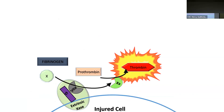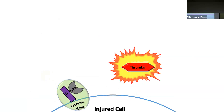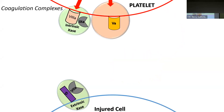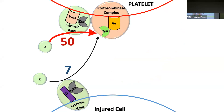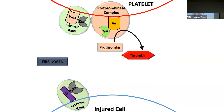Thrombin cleaves fibrinogen into fibrin — that is the extrinsic pathway from a laboratory standpoint. Thrombin also serves the role of activating platelets, and there are coagulation complexes on the surface of platelets as well: the intrinsic tenase, which serves the same function of making activated factor 10, and then a prothrombin complex that converts prothrombin into thrombin. The key difference is efficiency — activated platelets are about seven times more effective at creating thrombin than the injured cell.